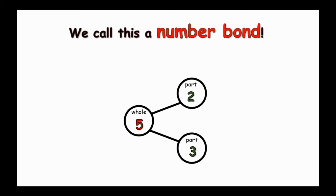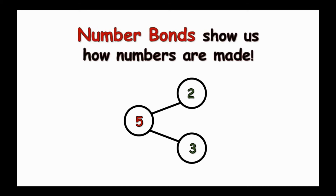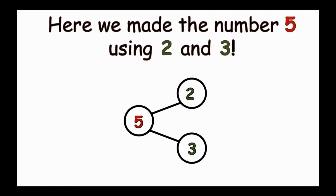We call this a number bond. Number bonds show us how the whole is made using the parts. Number bonds show us how numbers are made also. Here, we made the number five using two and three.